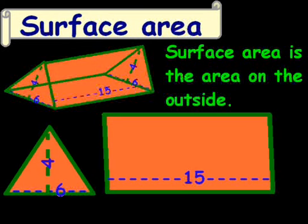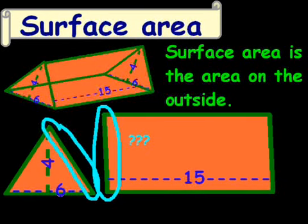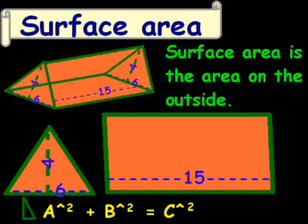We know that triangle is 4 by 6, and we want to figure out what the length of that side is. So if you remember the Pythagorean theorem, or the a squared plus b squared equals c squared theorem, that's how we're going to calculate that side. So for a, we know that the height is 4, so we're just going to plug in 4 squared, which equals 16.